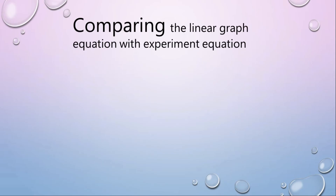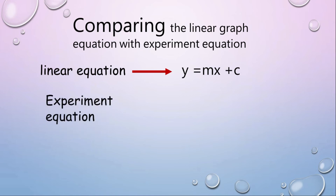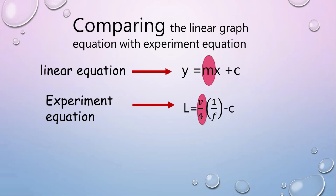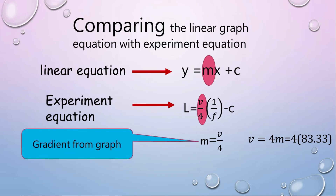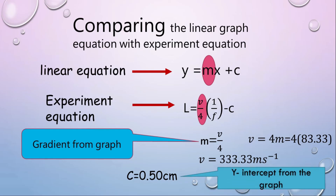Comparing the linear graph equation with the experiment equation. From both equations we find that m equals v over 4. Therefore, v = 4m = 4 × 83.33, where 83.33 is the gradient from the graph. So v = 333.33 meters per second. And c = −0.50 cm, which is the y-intercept from the graph.